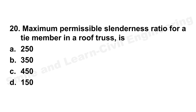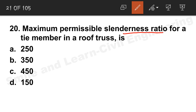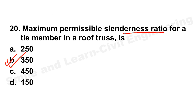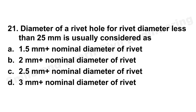Question 20: Maximum permissible slenderness ratio for a tie member in a roof truss. Please note the permissible slenderness ratio table — it is very important. The correct answer for a tie member in a roof truss is 350. Option B is the correct answer.